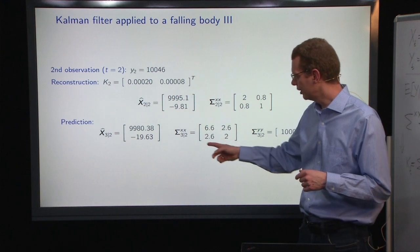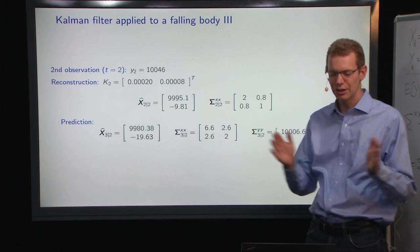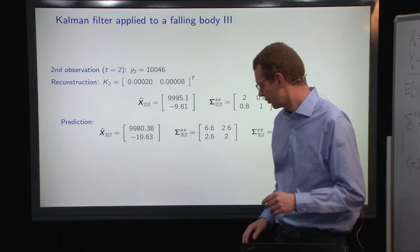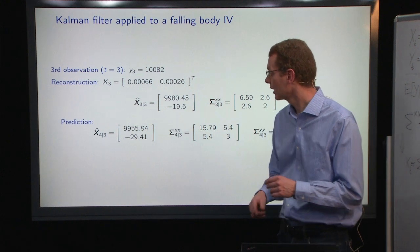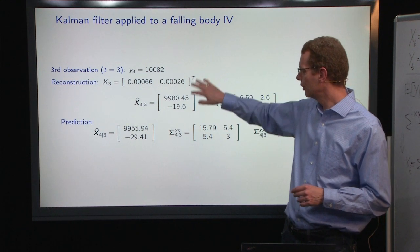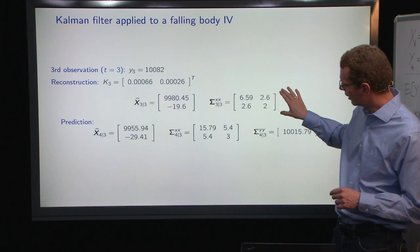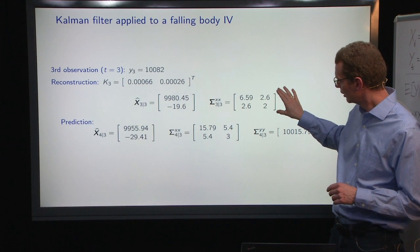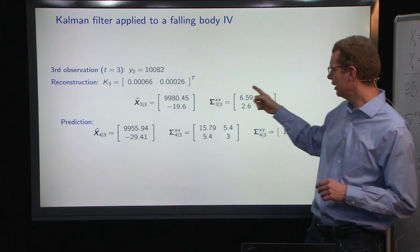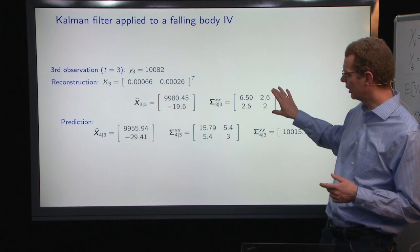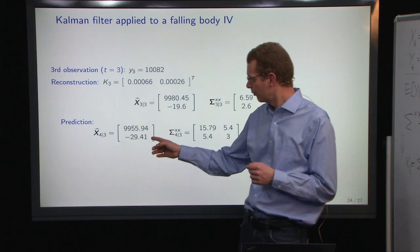Then we have an updated state uncertainty, and we make another prediction. The state covariance matrix is slowly growing up to a stationary level. We continue and do the same thing, and we get an update of the system noise matrix here.